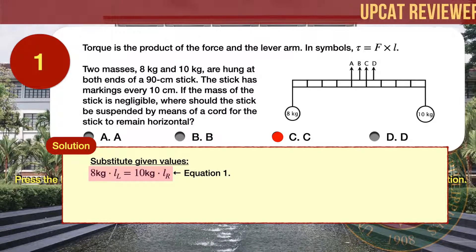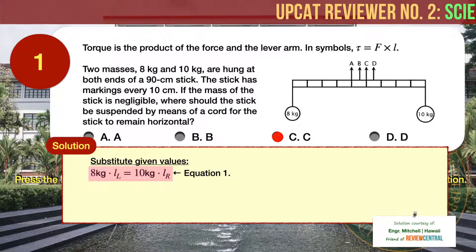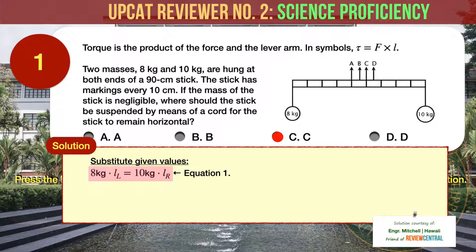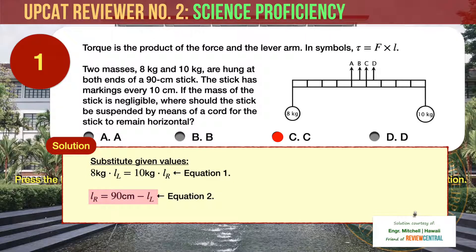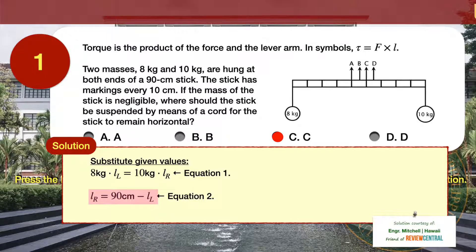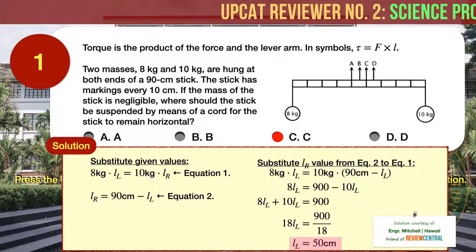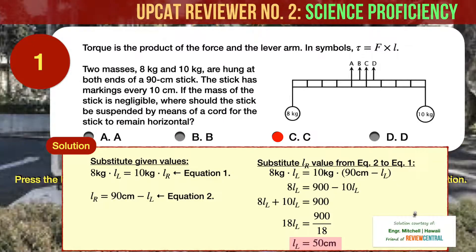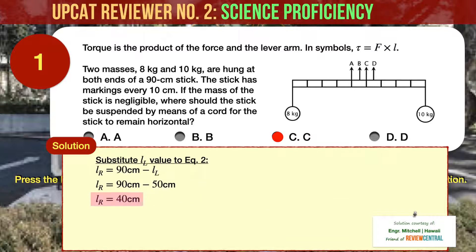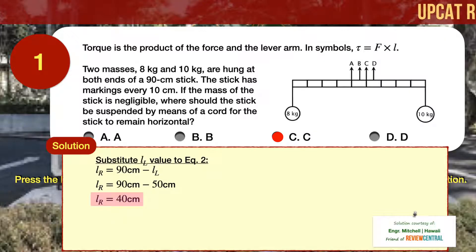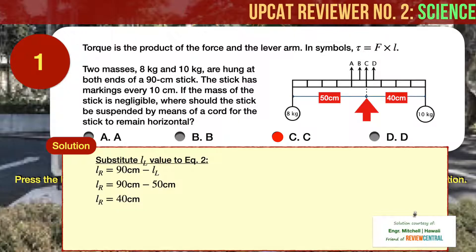Substituting the given values: 8 kg times the length of the stick to the left is equal to 10 kg times the length of the stick to the right. Let's label this as equation 1. But the length of the stick to the right is equal to 90 centimeters, which is the total length of the stick, minus the length of the stick to the left. Let's label this as equation 2. Substituting equation 2 into equation 1, we solve for the length of the left side and arrive at 50 centimeters. Substituting back into equation 2, we get 40 centimeters for the right side. Therefore, the stick should be suspended at point C.